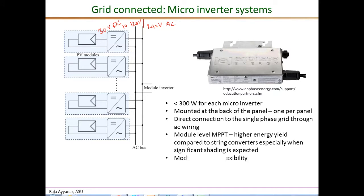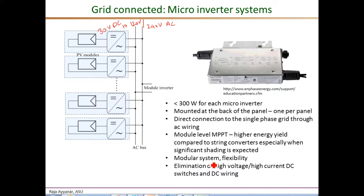Another advantage is that high-voltage, high-current DC wiring and DC switches are completely eliminated. The system is also inherently modular and flexible — if you want to increase the power rating, say from 3 kilowatts to 5 kilowatts, you simply add more panels with their built-in micro-inverters rather than reconfiguring DC wiring as would be needed with a string inverter. The main disadvantages are that micro-inverters tend to be more expensive on a per-watt basis compared to string inverters and certainly compared to central inverters, and their efficiency is currently one to three percent less than string inverters.